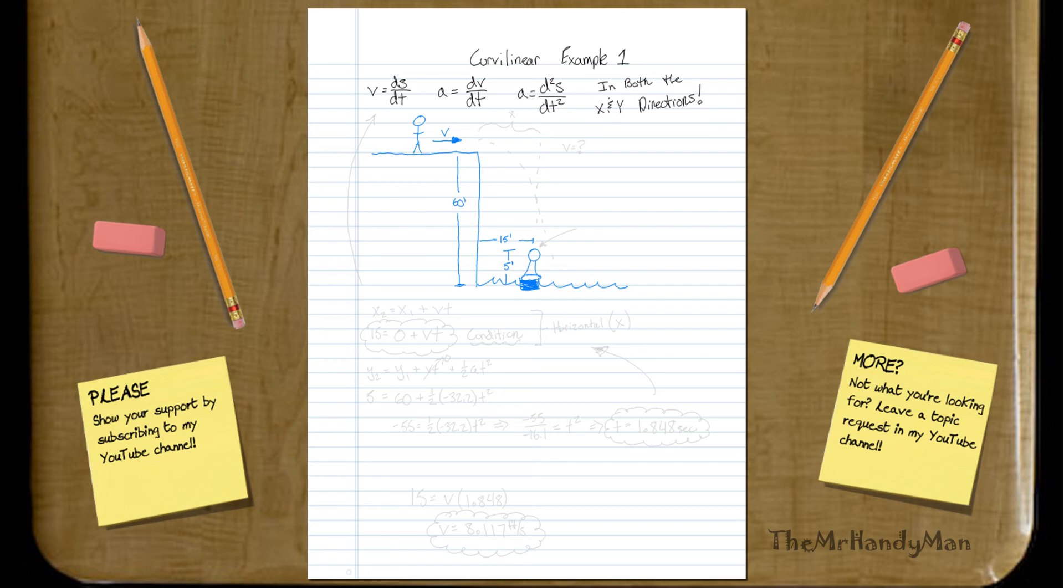So basically what we need to know is, what does V need to equal so that he clears that buoy. And so you've got to think about your conditions. One of the big conditions that we might find is that when he gets to this buoy,